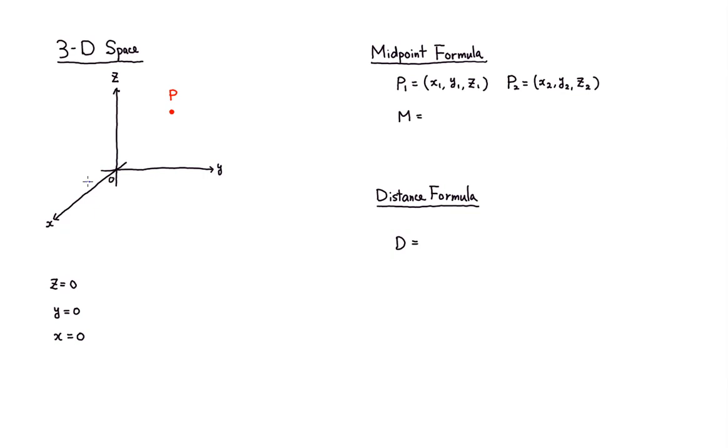So we can locate a point in three-dimensional space using XYZ coordinates. So let's do that. All right, so you have, let's say you have a point in space, point P, and the way to find its coordinate would be this.